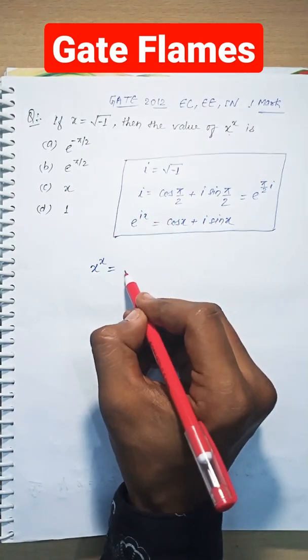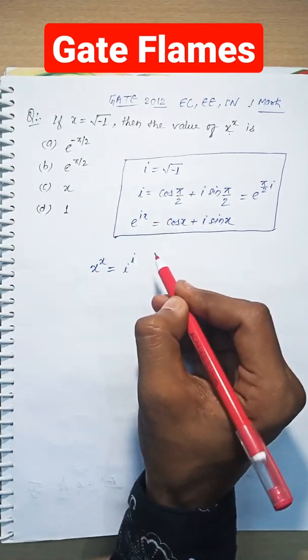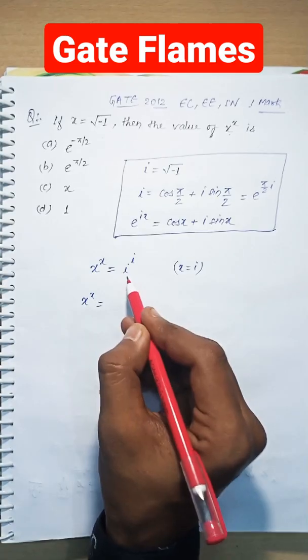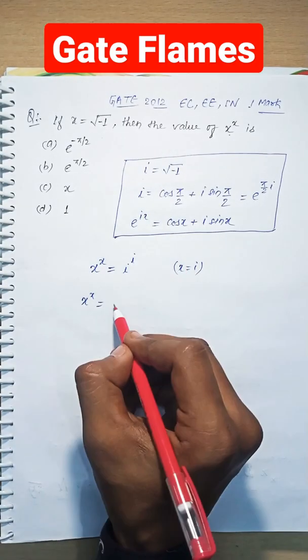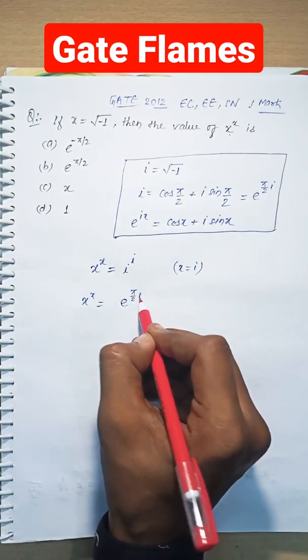x to the power x equals iota to the power iota, because x equals iota. So we can write x to the power x as (e to the power (π/2)iota) whole to the power iota.